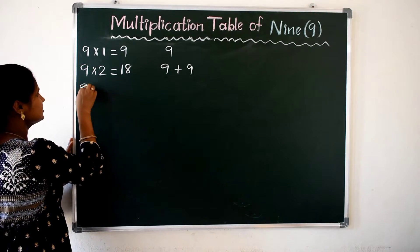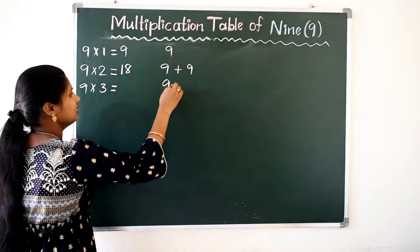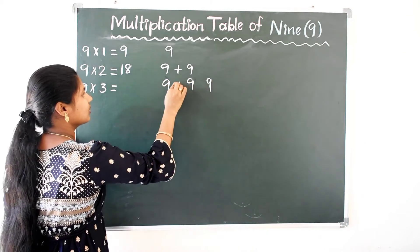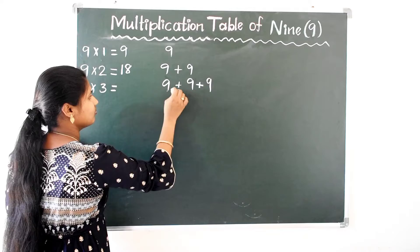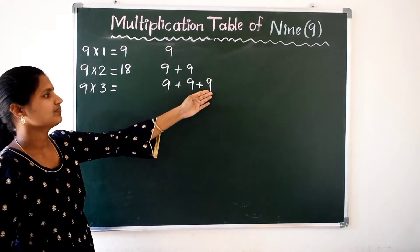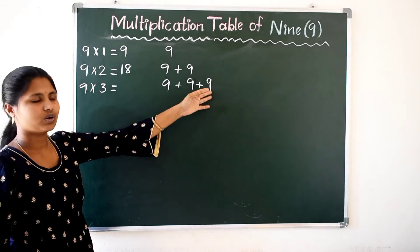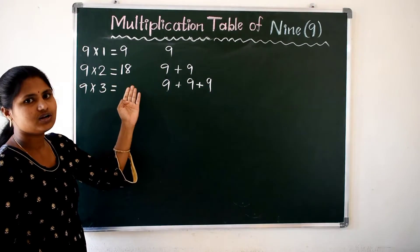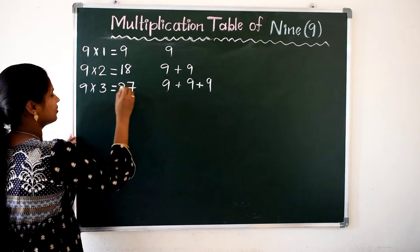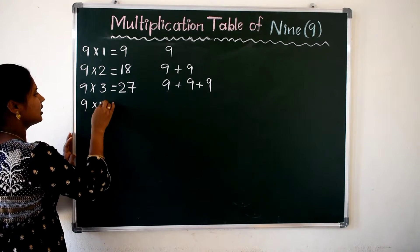Ok, next 9 3 times are — 9 plus 9 is 18, 18 plus 9, 18 plus 9 is 27. Ok, 9 3's are 27.